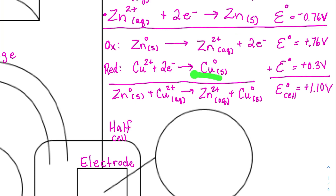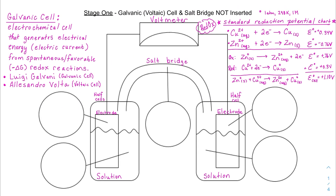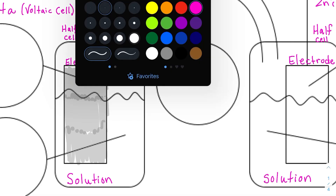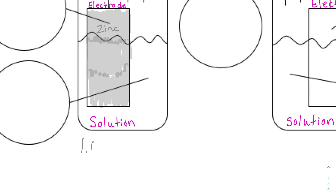Now that we have a positive overall reaction, let's set up and color-code the cell. I'll use gray for zinc — a typical shiny gray metal — as the electrode on the left side and label it as my piece of zinc solid. To keep it at standard conditions, I need a 1.0 molar zinc solution; I'll use zinc sulfate, which is a clear solution.